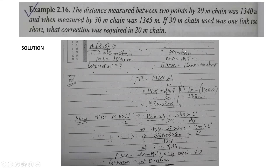Now look at the right side. When measured by 30-meter chain, the measured distance is 1315 meters. We have an error in the 30-meter chain — one link is too short. We also have a correction on the left side for the 20-meter chain. This is the data of the 20-meter chain and this is the data of the 30-meter chain.